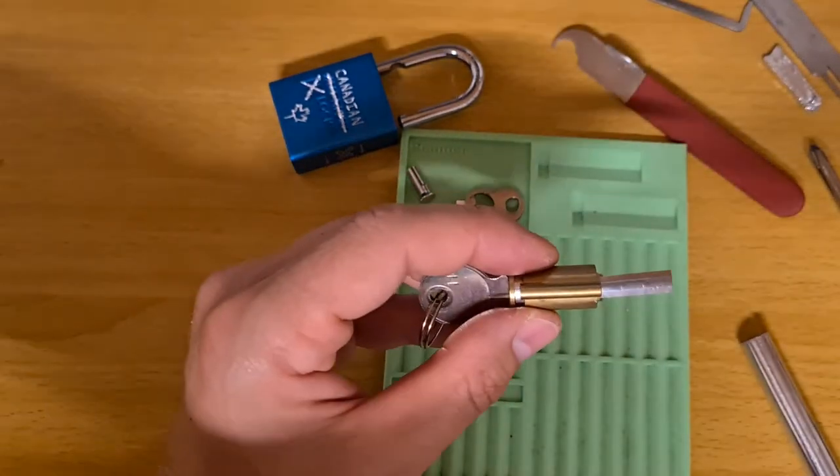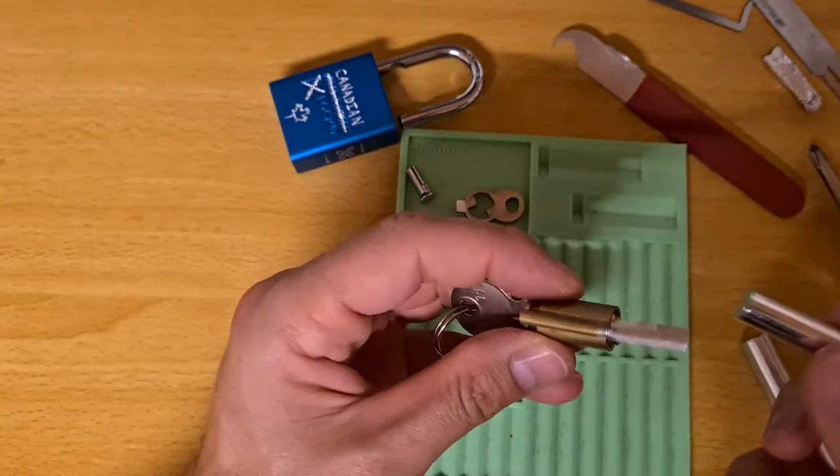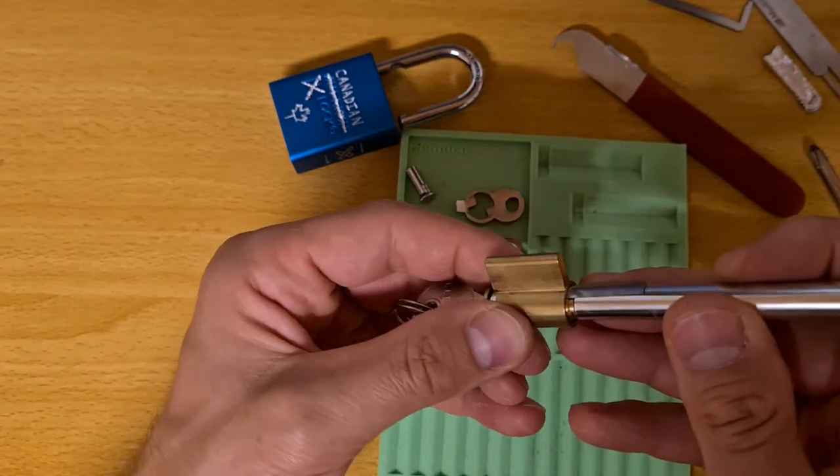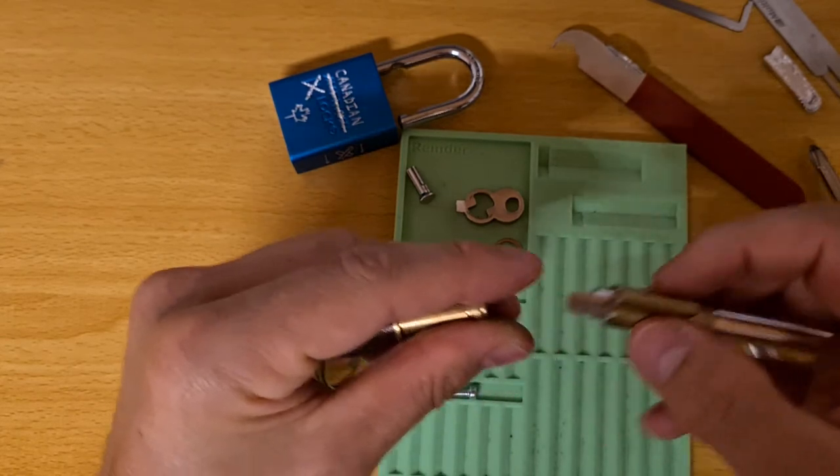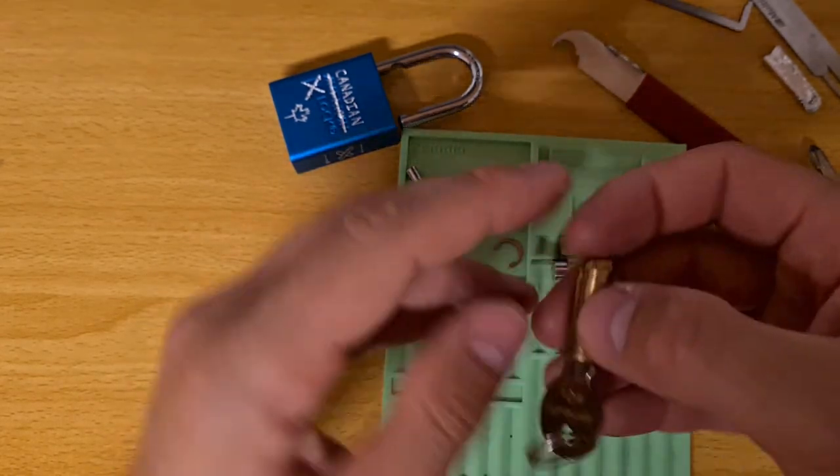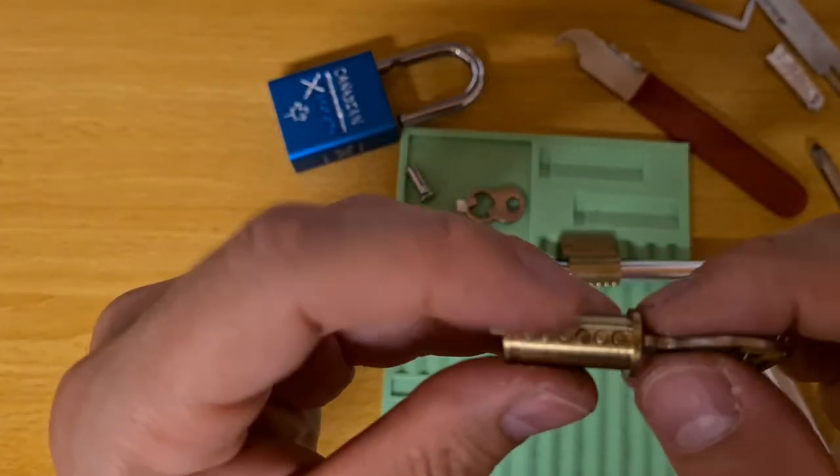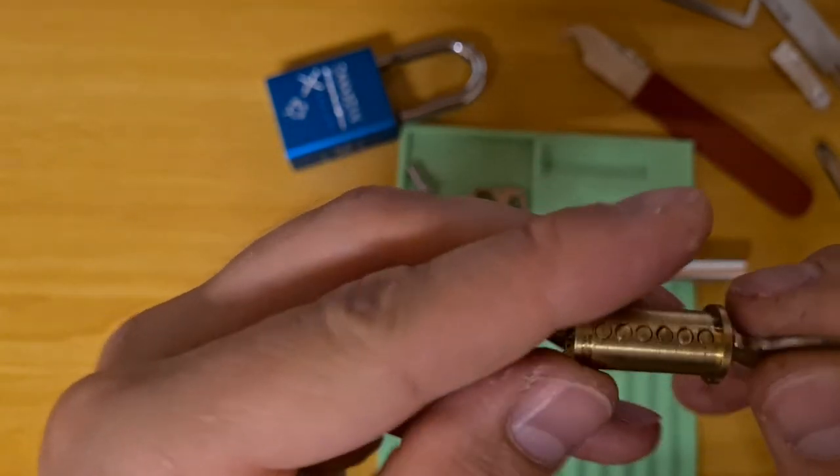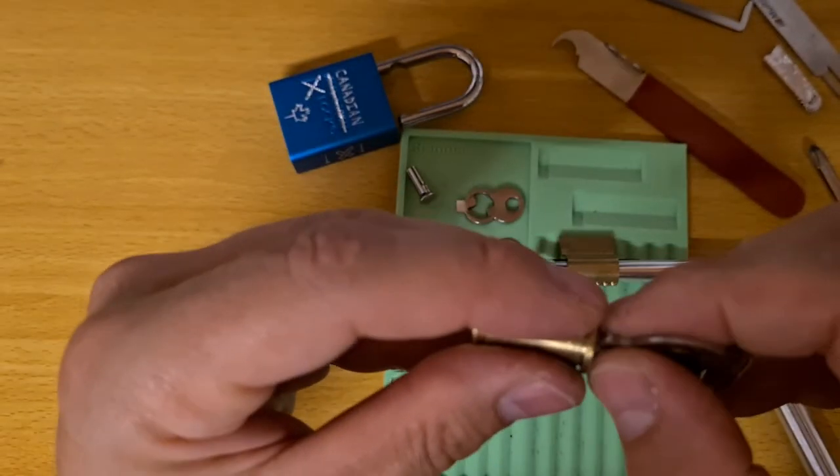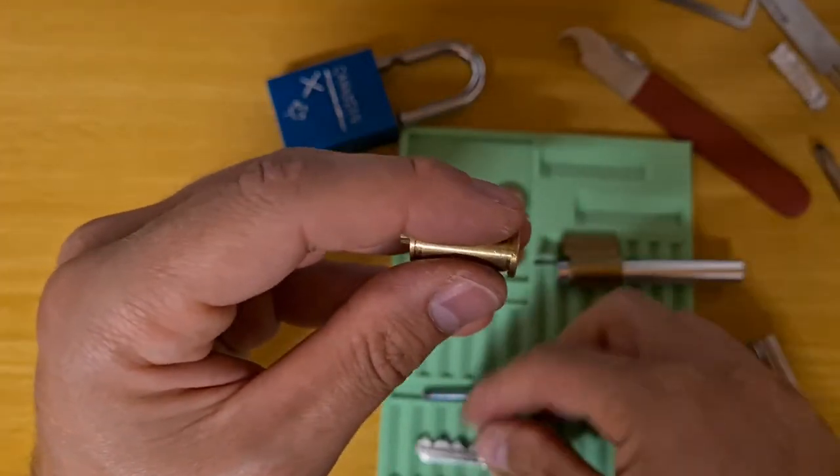Let's see, do I even have a small follower? Yep, I do. Let's see. Six pins, very nice. Quite flush with the core. Let's get the key out.